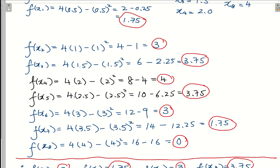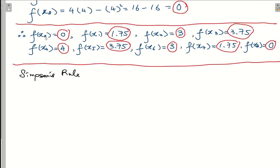After calculating all values: f(x₀) = 0, f(x₁) = 1.75, f(x₂) = 3, f(x₃) = 3.75, f(x₄) = 4 (implied symmetry), f(x₅) = 3.75, f(x₆) = 3, f(x₇) = 1.75, f(x₈) = 0. Now applying Simpson's rule: the integral is approximately Δx over 3, and since Δx = 0.5, that gives 1/6 times the bracket of f(x₀) + 4f(x₁) + 2f(x₂) + 4f(x₃) + 2f(x₄) + 4f(x₅) + 2f(x₆) + 4f(x₇) + f(x₈).